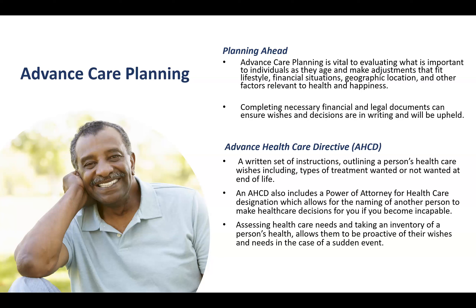I caution people against multiple decision-makers, because if you have three kids and say majority rule, and it's two to one to decline life-saving treatments with one dissenter, the hospital is likely to say go get a court order. It's important from a practical perspective to have a primary decision maker, with a secondary if the primary is not available.